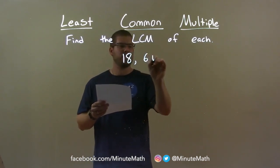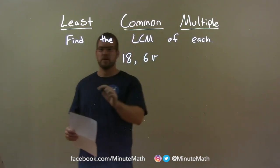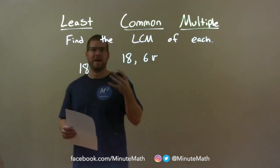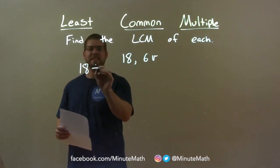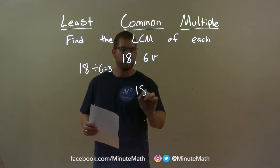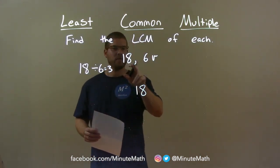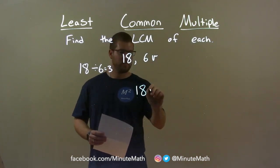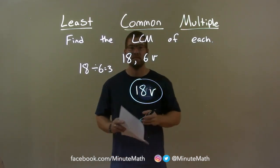18 and 6d. I first deal with just the numbers and take the largest, 18. I go through its multiples to see which one is divisible by 6. Luckily, 18 is divisible by 6, and that's going to be 3. So the number I'm looking for is 18. Now for the variables: I have no variable here and one variable here. We have to encompass all variables, so my final answer is just 18d.